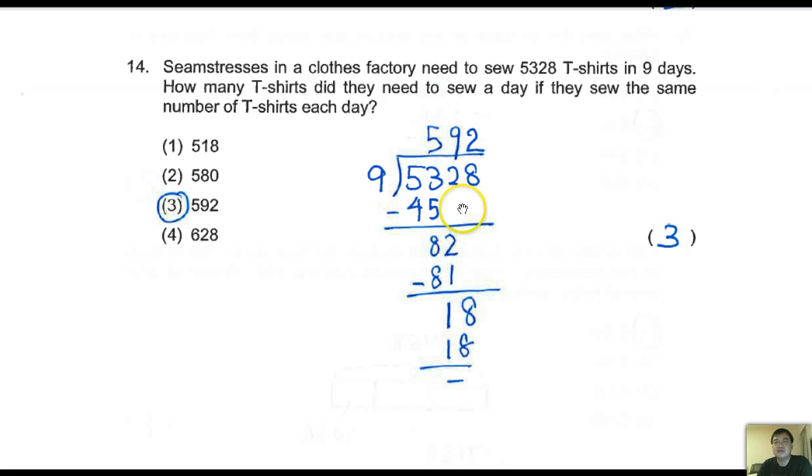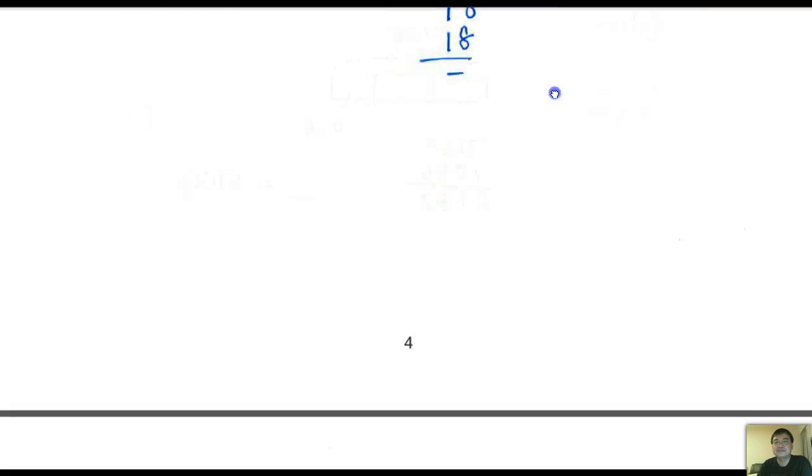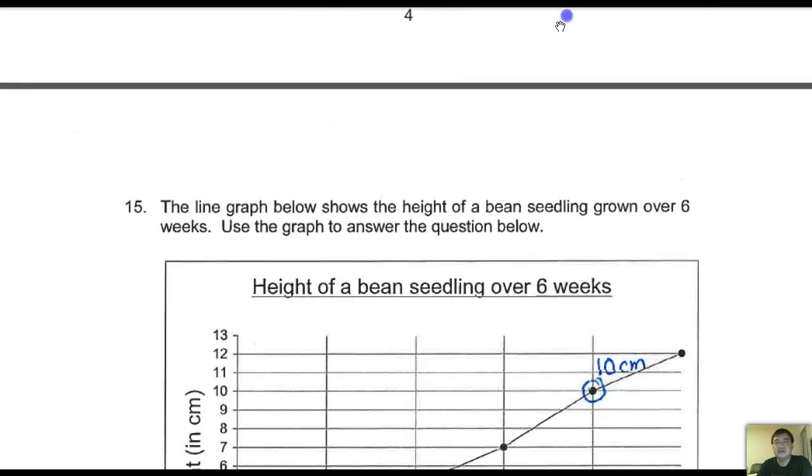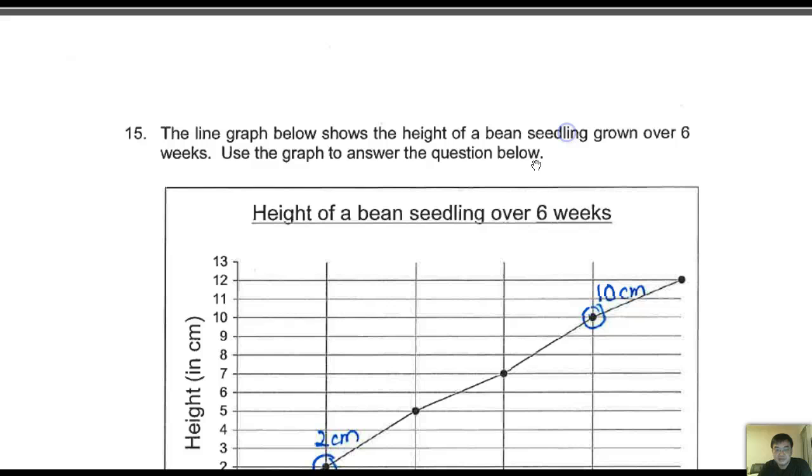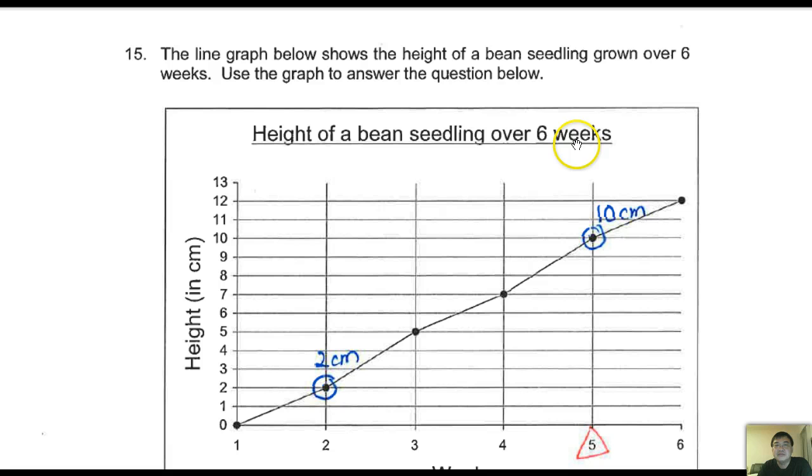If you don't quite understand, look at this one by one, step by step, and try to understand yourself. Let's carry on. The line graph here shows the height of a bean seedling grown over 6 weeks. Here 1, 2 - this probably is definitely week 1, week 2, week 3, week 4, week 5, week 6. Now the height is here, 0 all the way to 13.